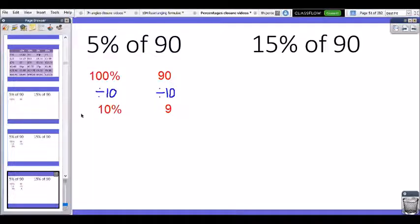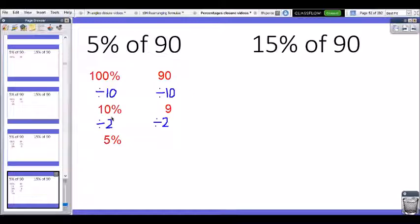And how do I get from 10% to 5%? What calculation takes me from 10 to 5? Well, I'm dividing by 2, aren't I? So what's half of 9? Well, it would be 4.5. 5% of 90 is 4.5.